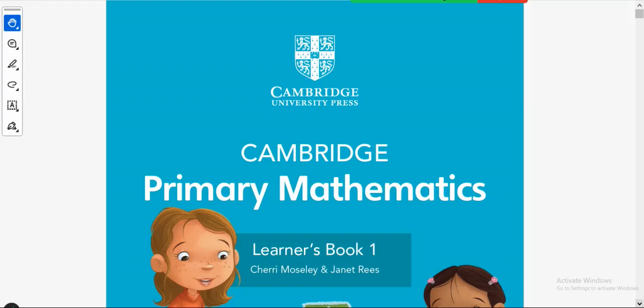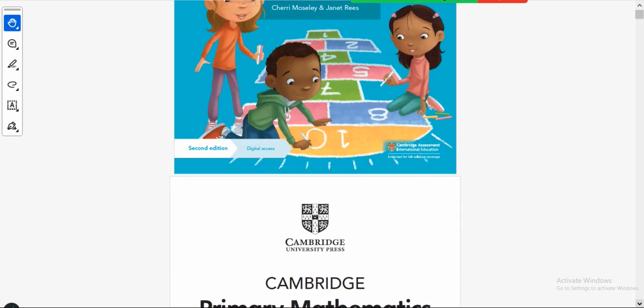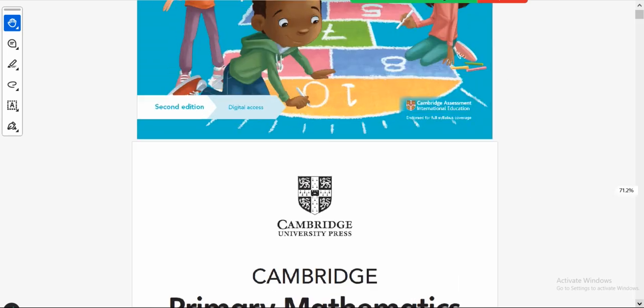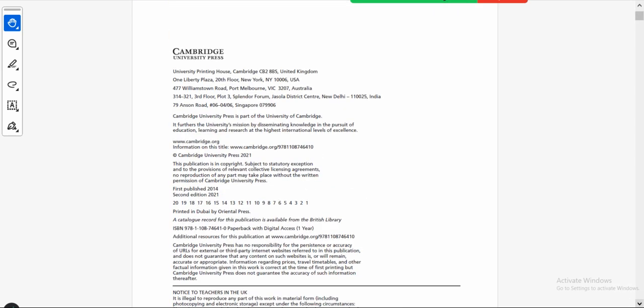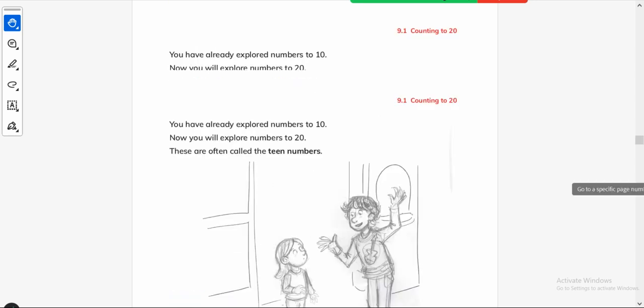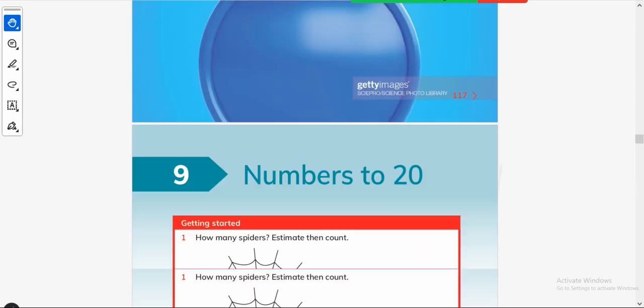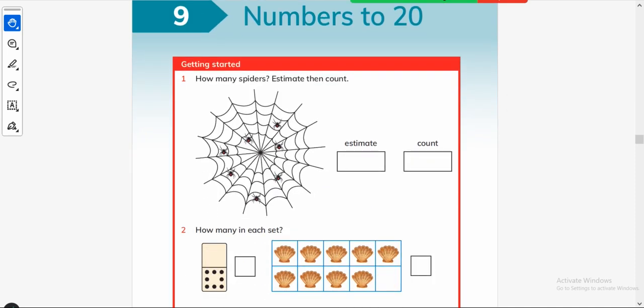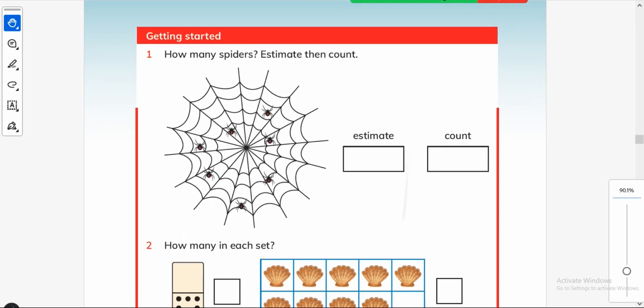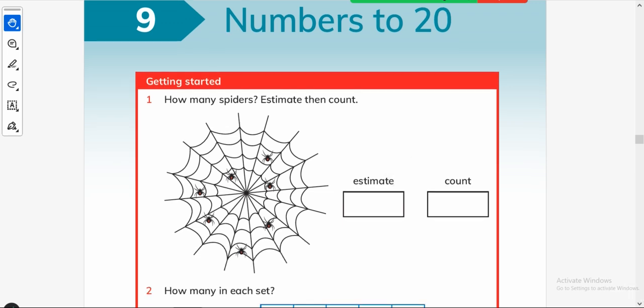Assalamu alaikum. This is Cambridge Primary Mathematics Learner's Book 1 and I am Asya Asen. In my today's video, I will tell you how to do unit number 9. The unit number 9 is about numbers 2 to 20, how to teach this unit in the class or how you can help your child to do this unit at home.